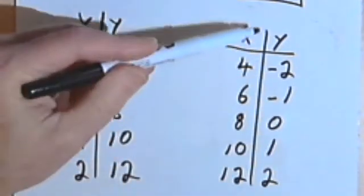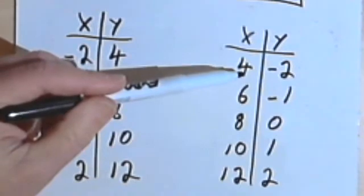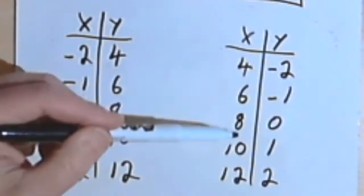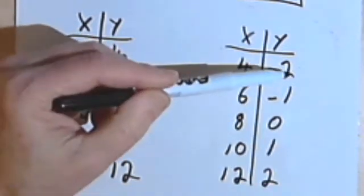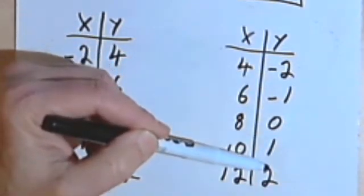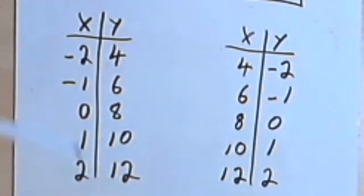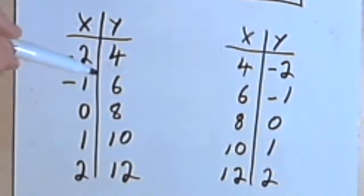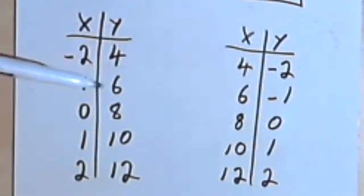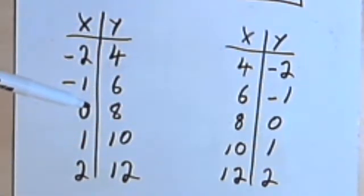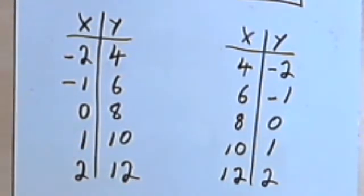Looking at this new table, the inverse table, I can see that that's a function also. I've only got one of each number in the input column, and each input gives me a very distinct specific output. So both the original table and the inverse table are functions. When you have a table which you can invert and end up with a function, that's called a one-to-one function. Not all functions are one-to-one — let's look at an example which isn't.